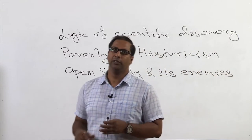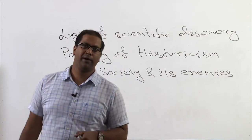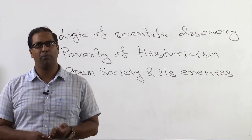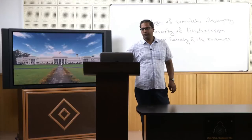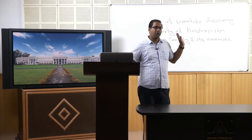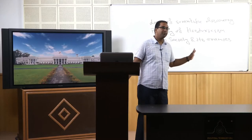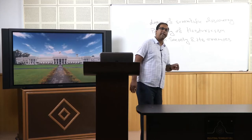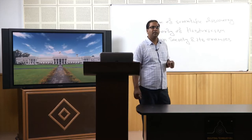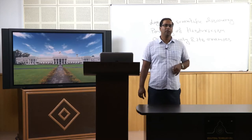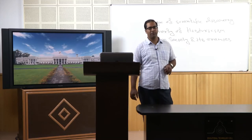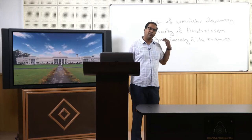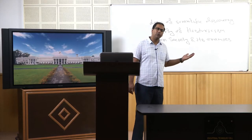These are some of the landmark books written by Karl Popper. For instance, Poverty of Historicism and Open Society and Its Enemies fall into the domain of social philosophy, political science, and social sciences. What does he do there?